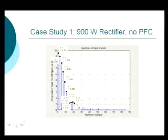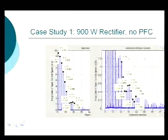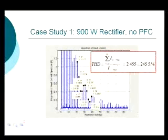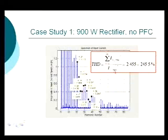We're measuring those values to calculate the THD. We sum the powers of the harmonics and divide by the power of the fundamental. What we see for this grossly distorted waveform is 245% distortion.